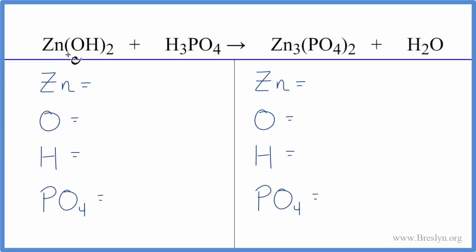In this neutralization reaction, we have zinc hydroxide plus phosphoric acid, and they combine. They give us zinc phosphate, which is a salt, and water. So that's our neutralization reaction.